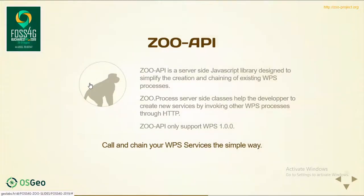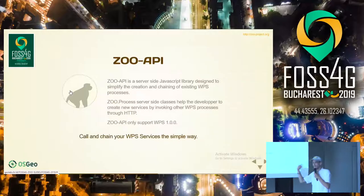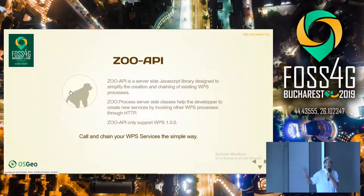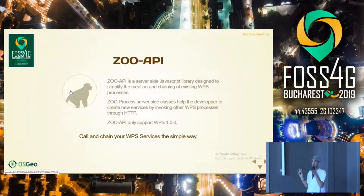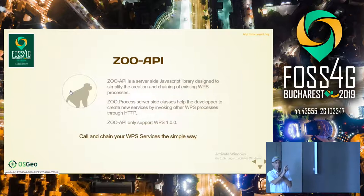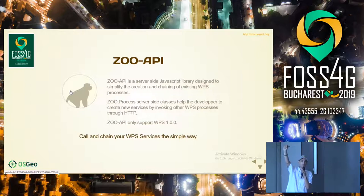Then you have the ZOO API. This API is based on SpiderMonkey, because the ZOO kernel relies on SpiderMonkey to execute services implemented in JavaScript. So you can run services in JavaScript and from that JavaScript source code you can also invoke any other existing services. If you don't know any other programming language and want to write all your code in JavaScript, you can do so, using internal ZOO kernel functions exposed to the JavaScript world to invoke, for instance, one Orfeo Toolbox application, then one Python application, then one C application, then one Fortran application.